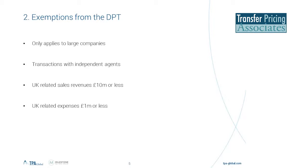It's probably easiest to start with who the rules don't apply to. There is an exemption for large groups or large enterprises, and only one party to a relevant transaction needs to be large. Transactions with completely independent agents are not subject to the DPT. We also have an exemption where UK-related sales revenue is 10 million or less, applied on a group basis. So if you have a group providing goods and services fragmented into separate entities, you look at both entities' UK sales total when applying the 10 million threshold.